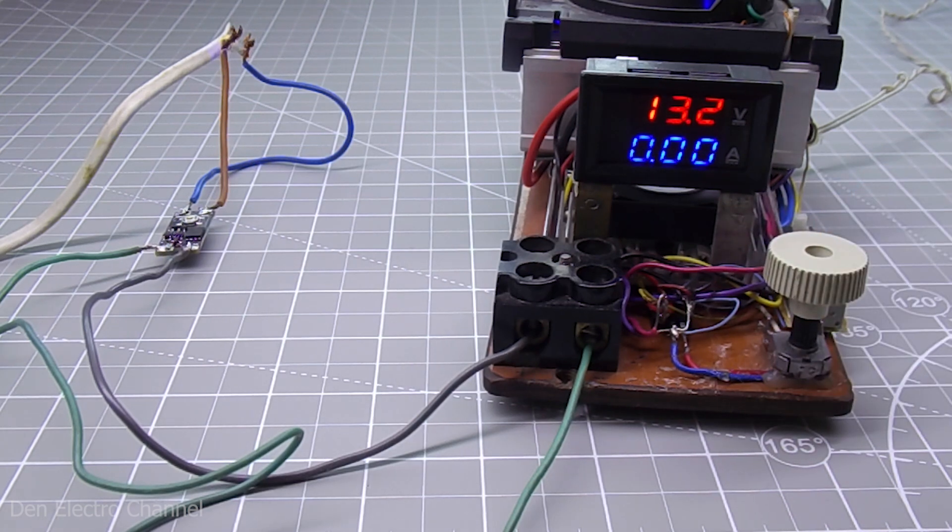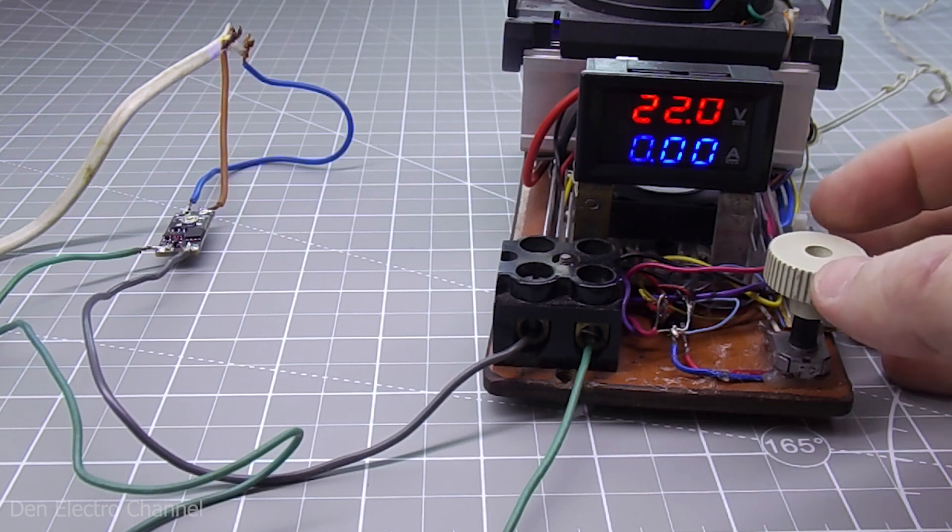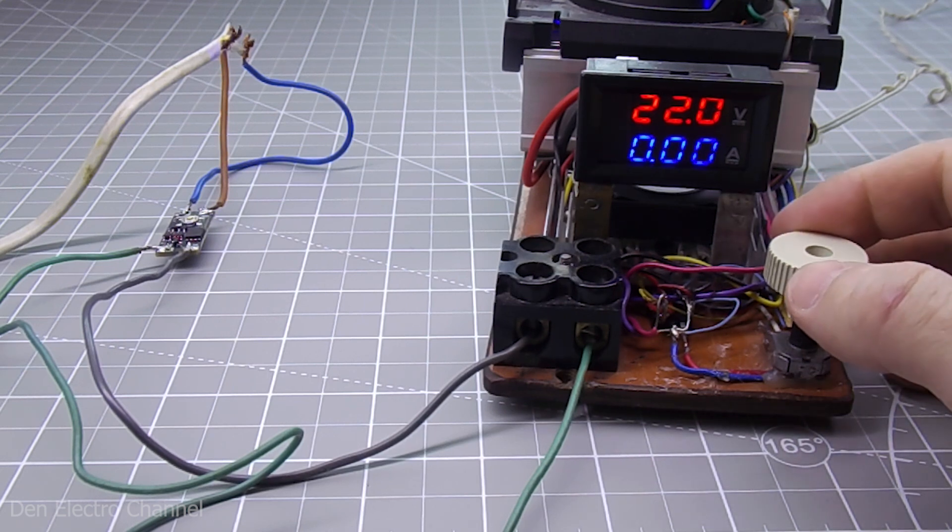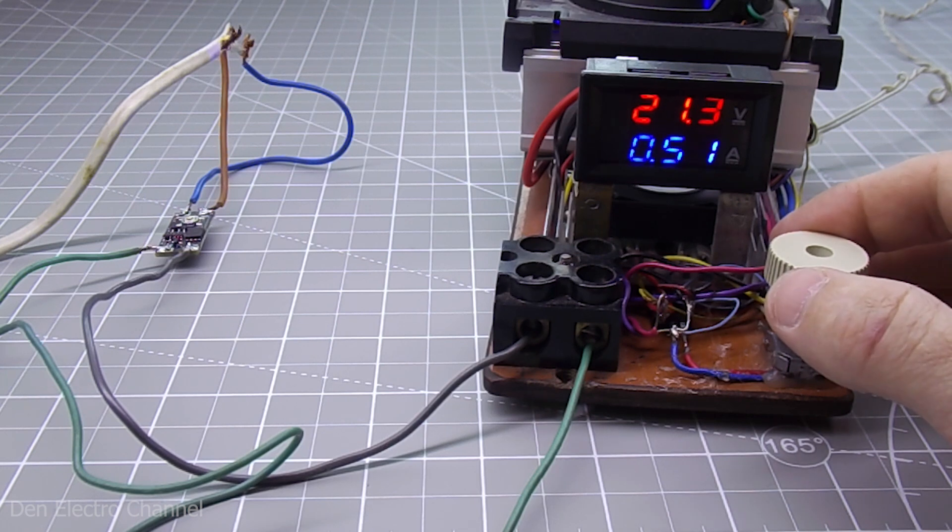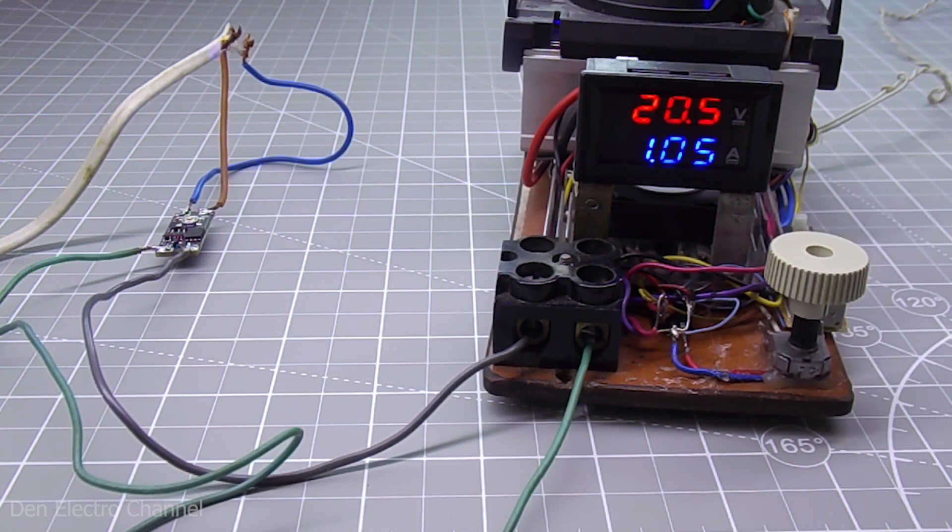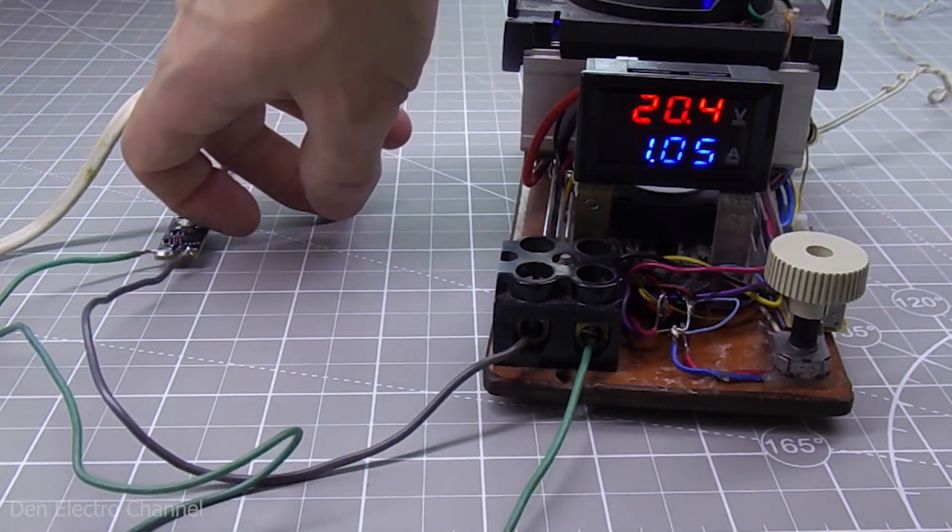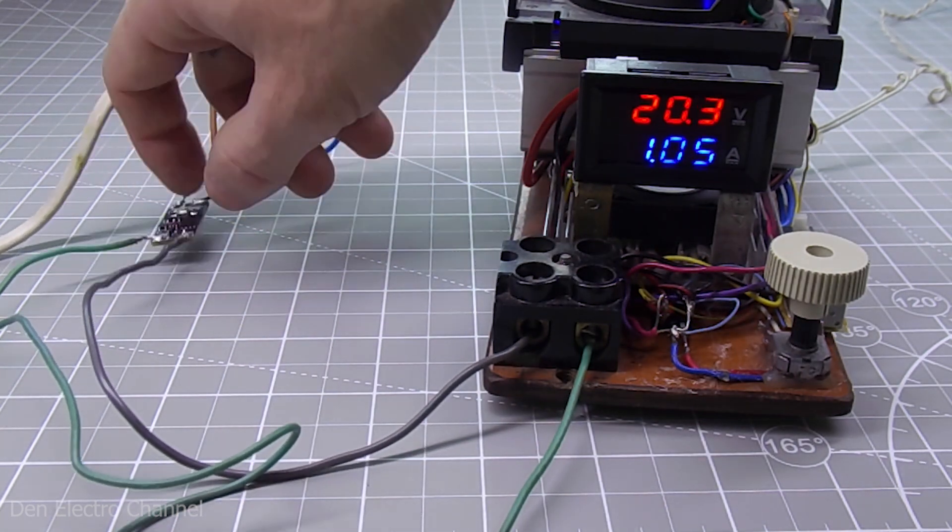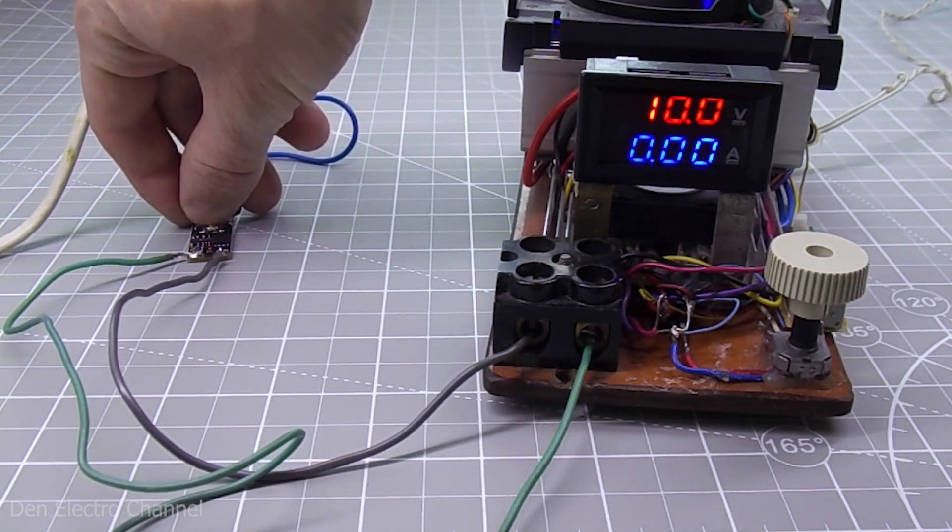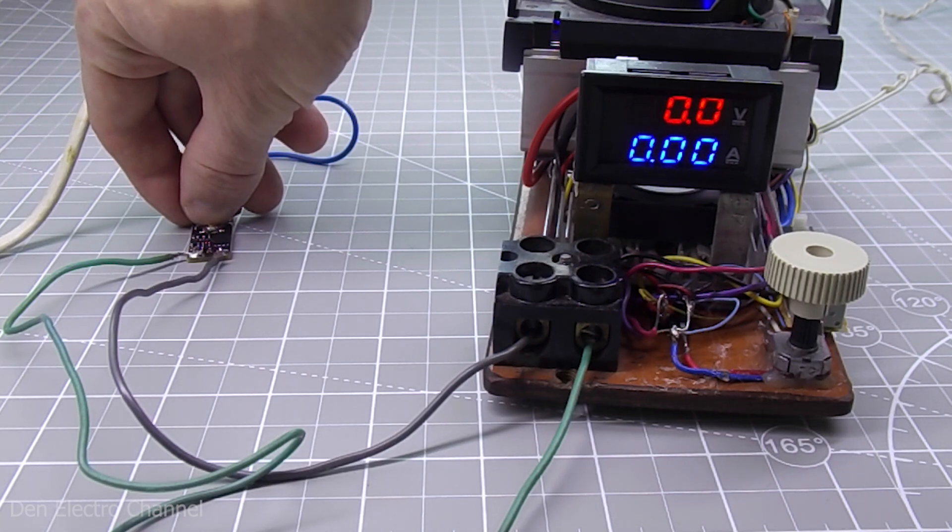Now I will lower the current and increase the voltage. Now the board input is 22 volts. With a current of 1 ampere, the voltage on my power supply drops to 20.5 volts. The board can easily withstand such a small current and is already starting to cool down.